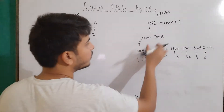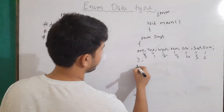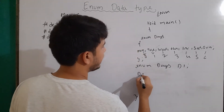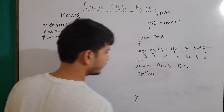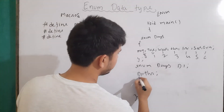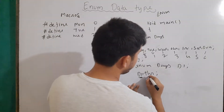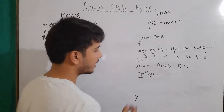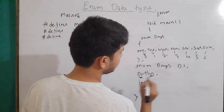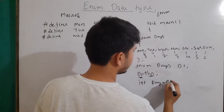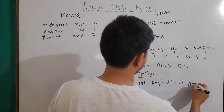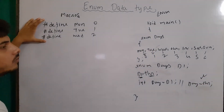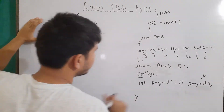Another difference is that enum can also have their own variables. For example, I can write enum days, then make a variable with the name d1, and assign some value: d1 equals to thr. Then later on, I can initialize this to some other variable as well. I can write: int day equals to d1, or int day equals to thr. Both will be perfectly fine. But in the case of macros, no such feature is provided. This is our second difference.